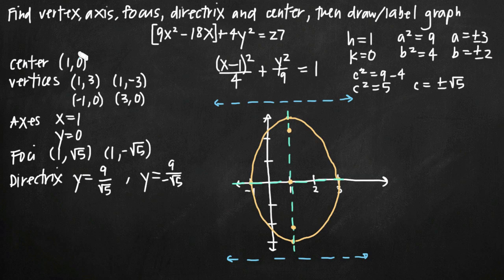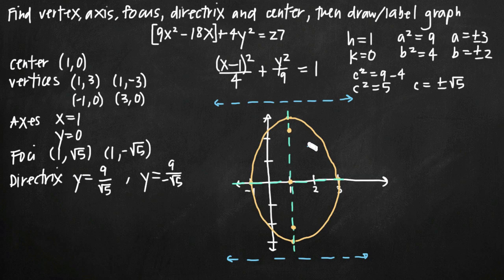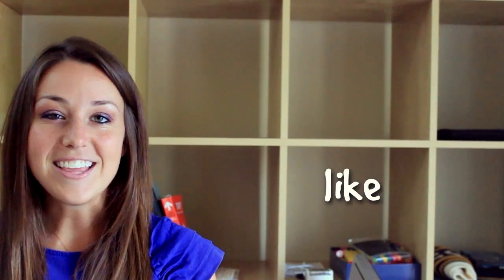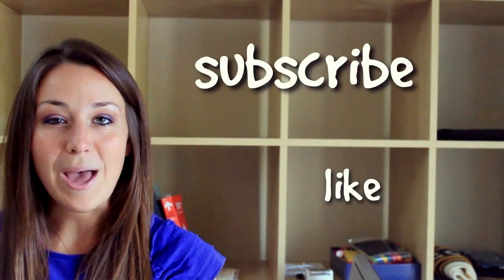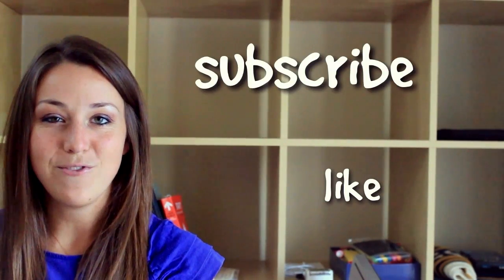That's how you find the vertex, axis, focus, directrix, and center of an ellipse after putting it in standard form and then draw and label the graph. I hope you found that video helpful. If you did, like this video below and subscribe to be notified of future videos.